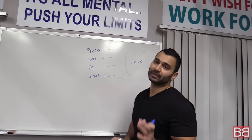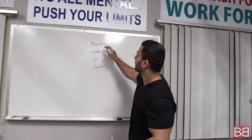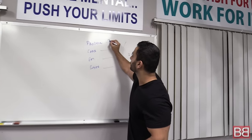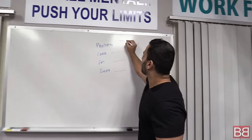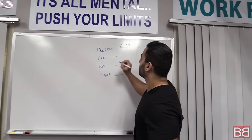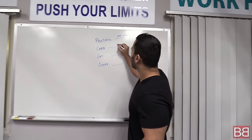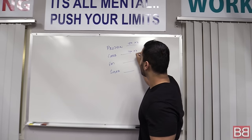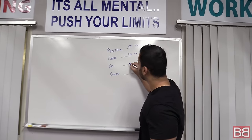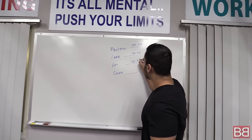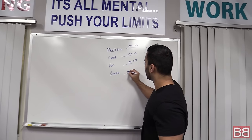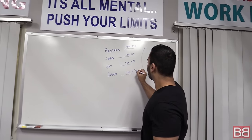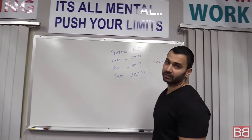You need to know where calories come from. In 1 gram of protein, you have 4 calories. In 1 gram of carb, you have 4 calories. In 1 gram of fat, you have 9 calories. In 1 gram of sugar, you have 4.2 calories.